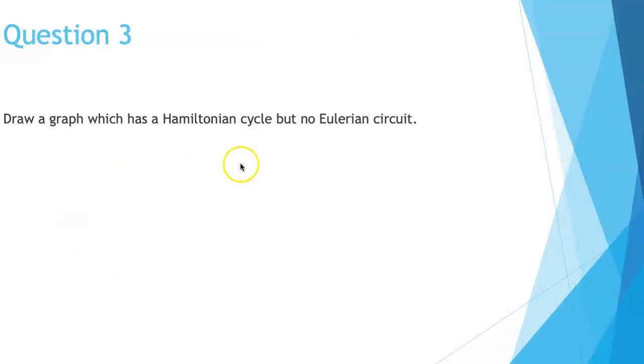So the third one is Hamiltonian cycle and no Eulerian circuit, and the fourth one is Eulerian circuit but no Hamiltonian cycle.